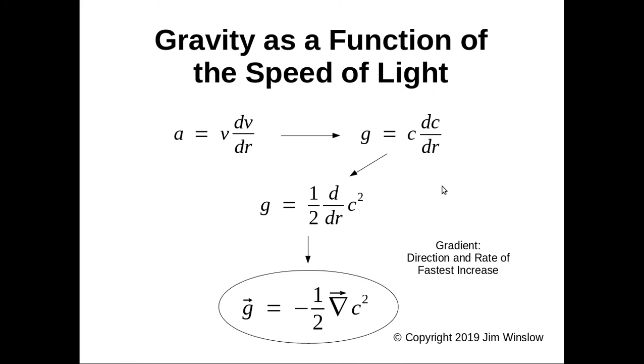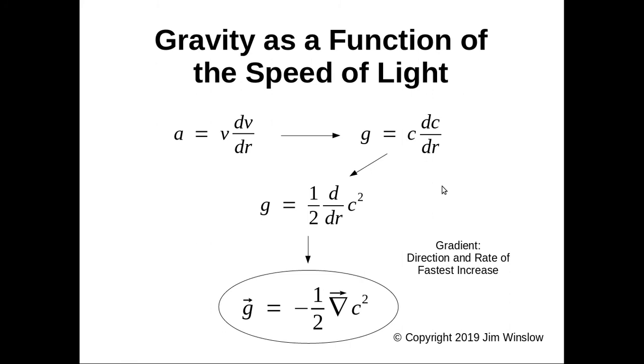Take a closer look at this. Here is the wavefront rotating rod equation for acceleration. Substitute g for a and c for v and you get g = c·dc/dr. This equation relates the acceleration due to gravity to the speed of light.